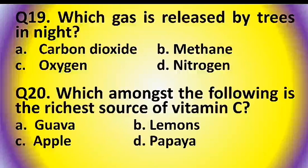Question 19: Which gas is released by trees at night? Options are: carbon dioxide, methane, oxygen, or nitrogen. The answer is option A: carbon dioxide.